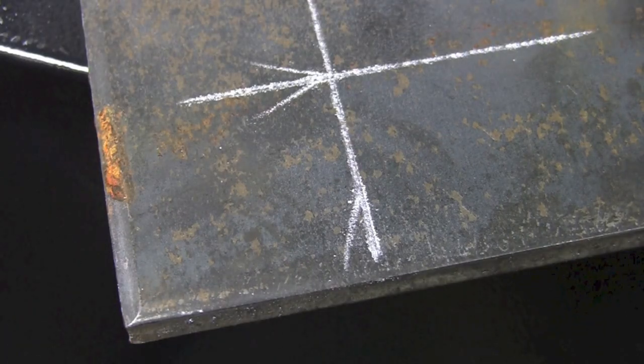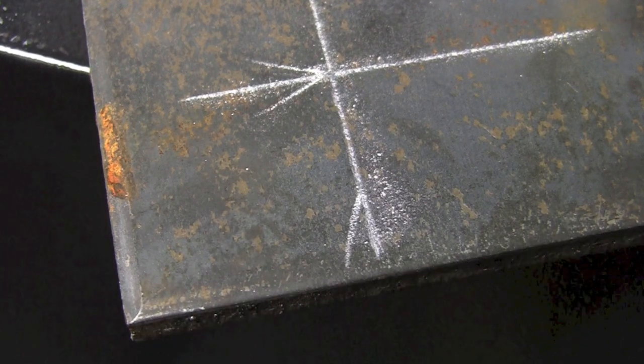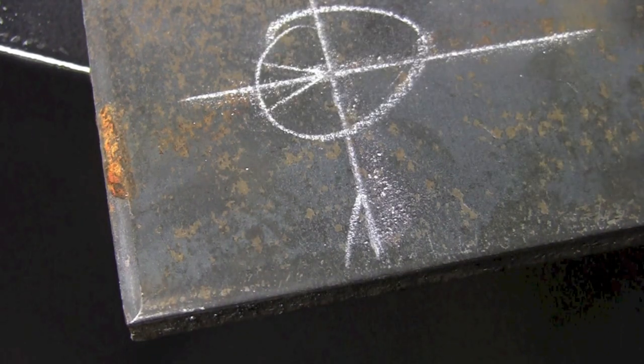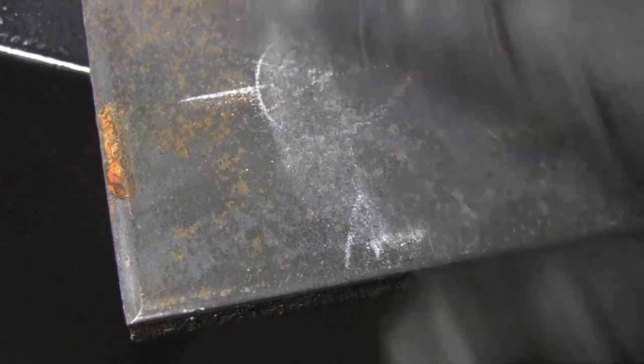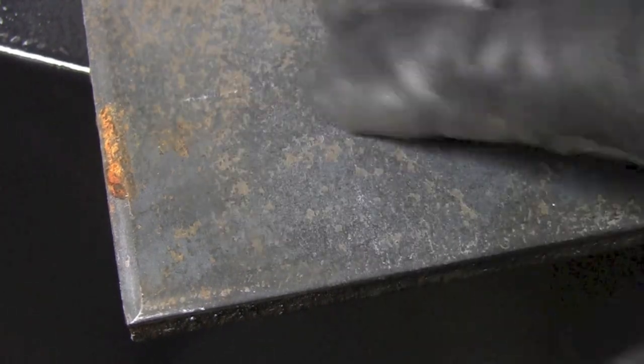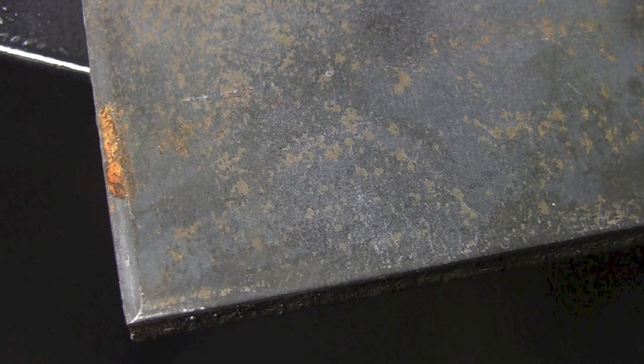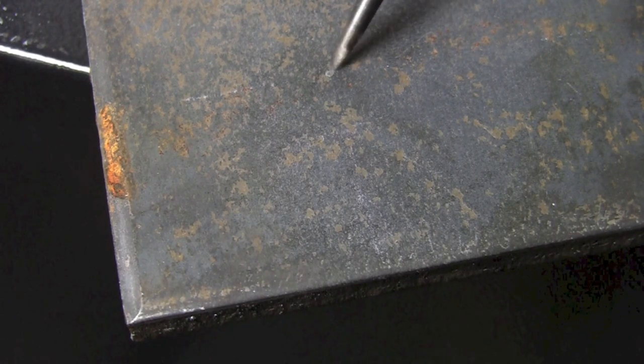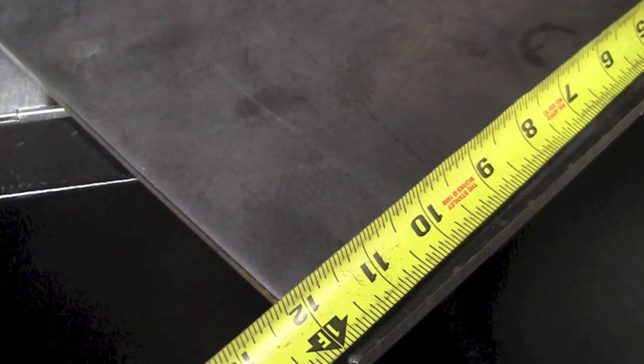So now we're going to go ahead and grab the center punch, come back, and put the prick mark right at the crosshairs there. Then we'll be able to come back, and sometimes people like to come back with a soapstone and mark it like that with a circle, so somebody coming later can find it. The other beauty of using the center punch is even if the soapstone lines get wiped away, we'll still be able to find that little punch mark if we look in the right location.